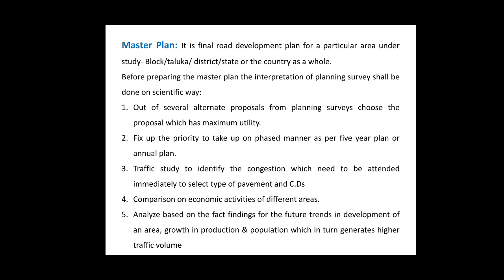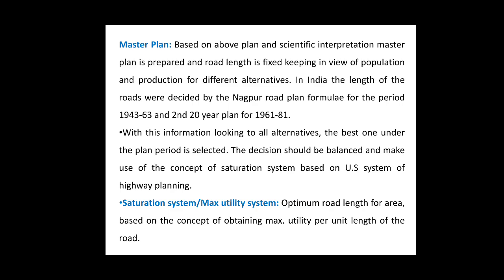One will have to forecast the total growth in the production and population of the area while designing and planning a road proposal in order to meet the future requirements. Based on the above plans and scientific interpretation, the master plan is prepared and a road length is fixed keeping in view the population and production of the different alternatives. In India, the length of roads is decided by the Nagpur road plan formula for the period 1943 to 1963, and the second 20-year plan for 1961 to 1981. The decision was based on the US system of highway planning.